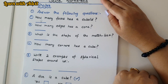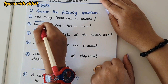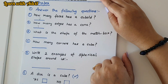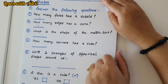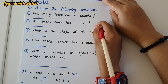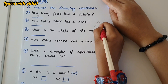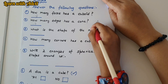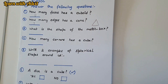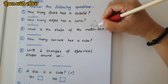How many edges has a cone? It has 1 edge — a curved edge. Can you draw a cone for me? Draw a slanting line, then another slanting line, and then a curved line at the bottom. So this is the edge of the cone.